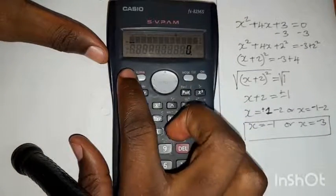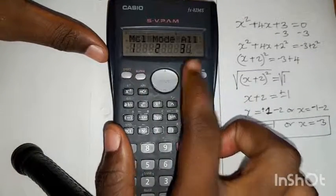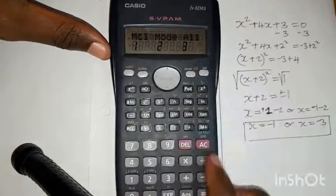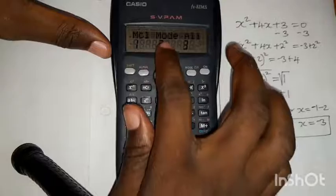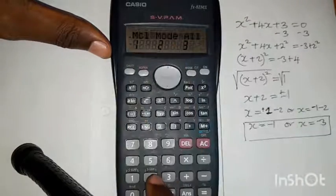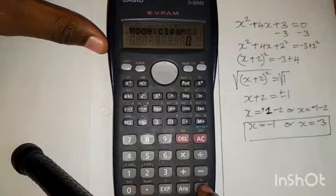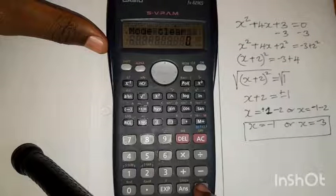Again, press shift, mod. In the first place, we pressed 3. Let's also clear the mod here. So we press 2. You also press the equal sign twice.